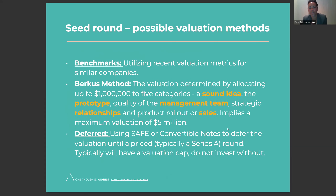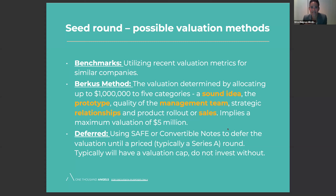For the seed round, here are some possible valuation methodologies. The first is benchmarks — basically looking at recent valuation metrics for similar companies. If you see that three similar-stage companies in similar businesses with similar traction or revenue did rounds between $5 and $10 million pre-money valuations, you know your deal should probably get done in that range. That's how we use the market to inform pricing — one data point we use.